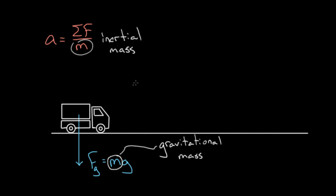Now in our universe, for a given object, these two values — inertial mass and gravitational mass — are going to be the same. So this truck's inertial mass, measured in kilograms, is going to be the exact same value as this truck's gravitational mass, measured in kilograms. But it didn't have to be that way.